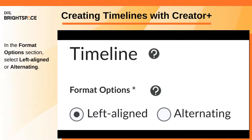In the Format Options section, select either Left Aligned or Alternating Content. Left Aligned Content appears only on the left side of the timeline, while Alternating Content appears in an alternating sequence on the left and right sides of the timeline.